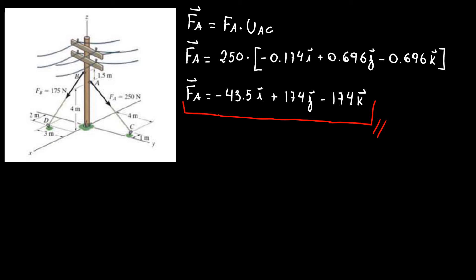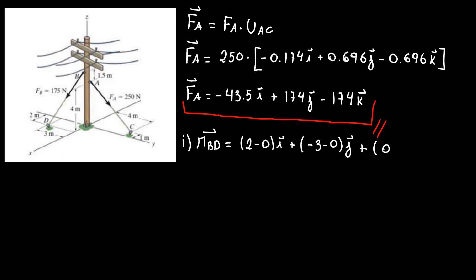Now to find the second one we have to redo our steps. The first step is to find the position vector RBD. So here I have 2 minus 0 I, plus minus 3 minus 0 J, plus 0 minus 5.5 K. So my position vector RBD is equal to 2 I minus 3 J minus 5.5 K. The unit is meters.